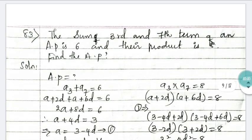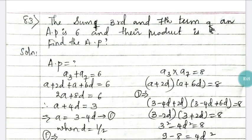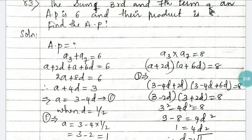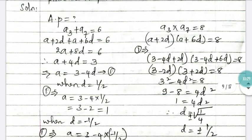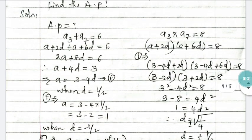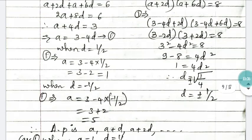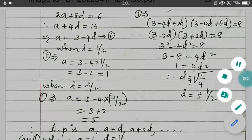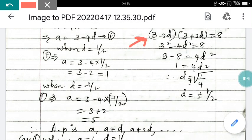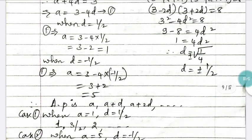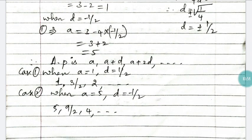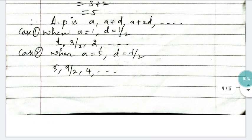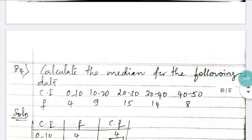Question 83: the sum of the third and seventh terms of an AP is 6 and their product is 8 — find the AP. Arithmetic progression questions are frequently repeated, so give them more focus. Write the equations, substitute equation 1 to find d, then go back to find a. This gives two cases, resulting in two forms of the AP.